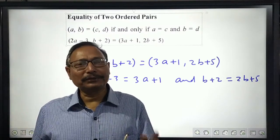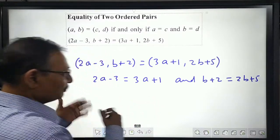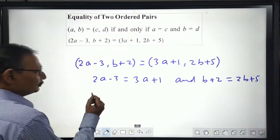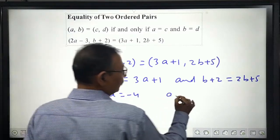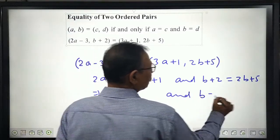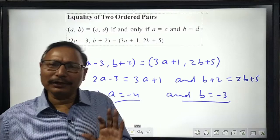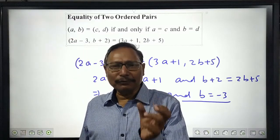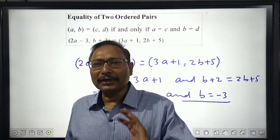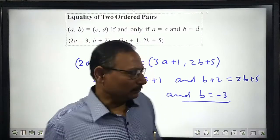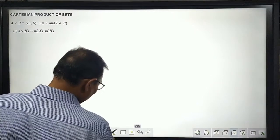From these equations we can find the values of a and b: a = −4 and b = −3. The key point is that two ordered pairs are equal only when their corresponding elements are equal to each other.